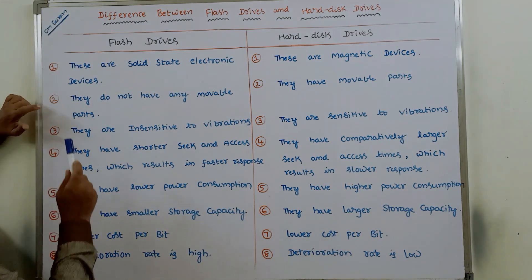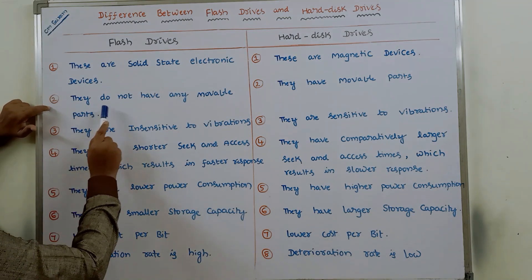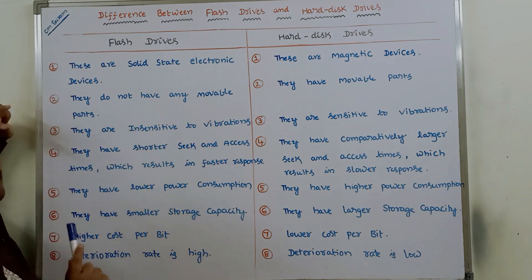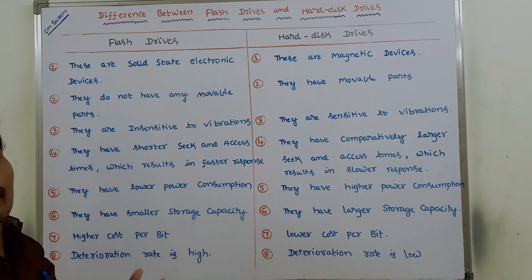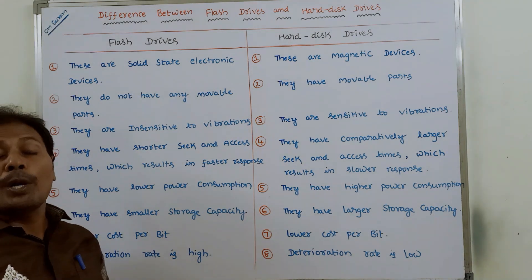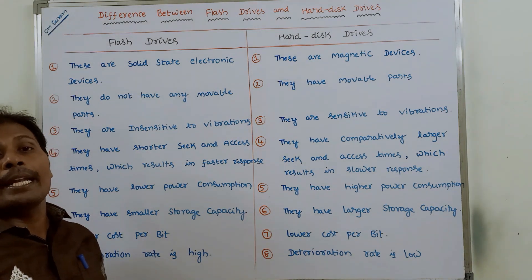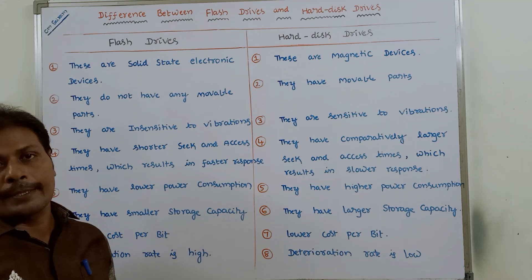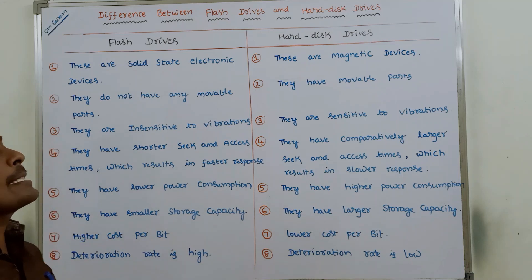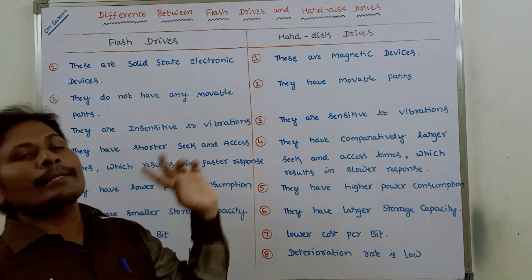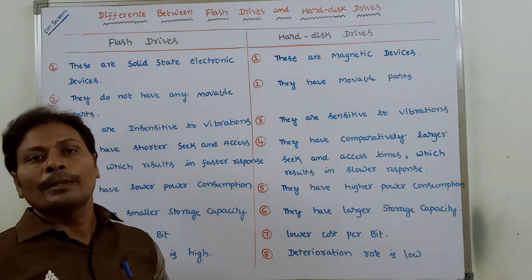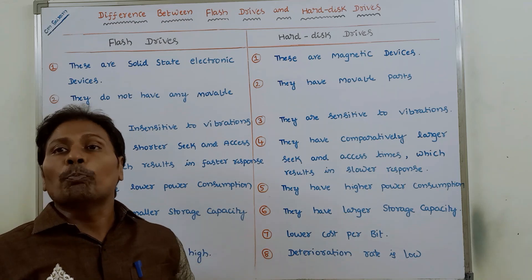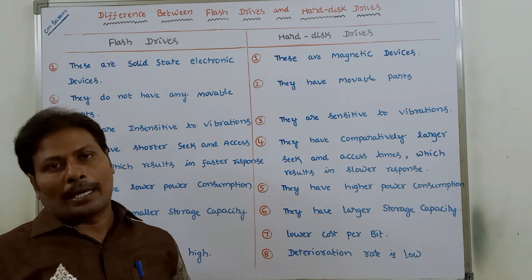The second point is that flash drives do not have any moving parts. Whereas, in the case of hard disk drives, they do contain moving parts.